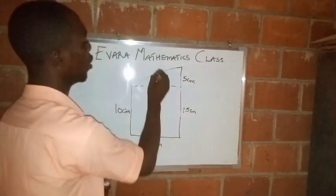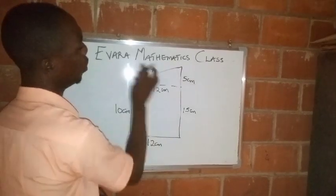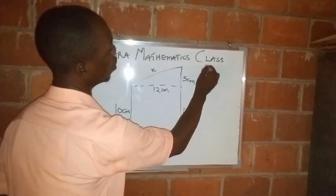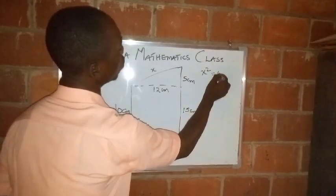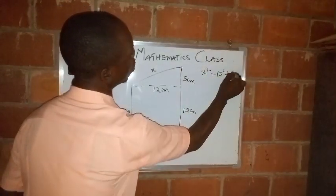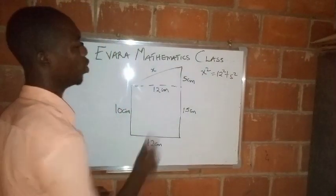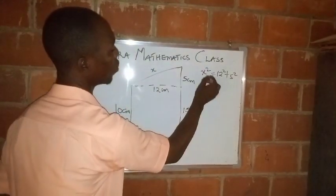We can use Pythagoras rule to get the value of this side. Let's label it as x. We all know that Pythagoras rule is the square of the hypotenuse is equal to the sum of the squares of the other two sides.